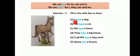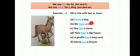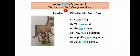First one — I dash a dog. I के साथ have use होगा। So I have a dog. Next — we dash a cat. We के साथ have use होगा। We have a cat. Next — she dash a horse. She के साथ has use होगा। She has a horse. Next — they dash a big house. They के साथ have use होगा। They have a big house.